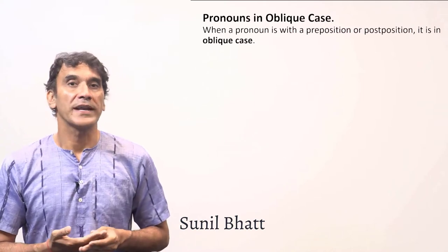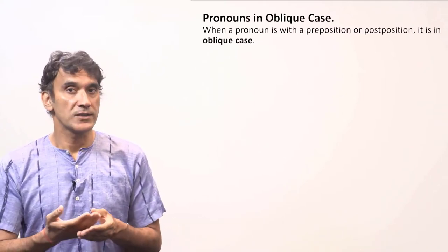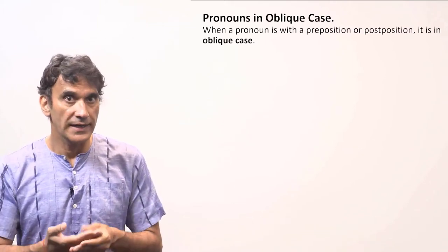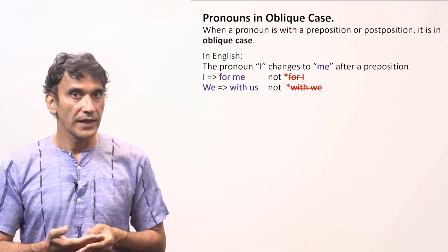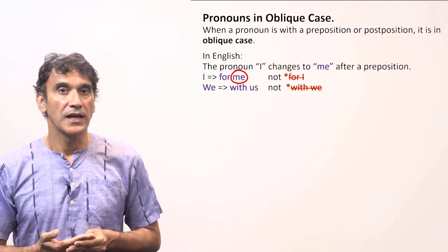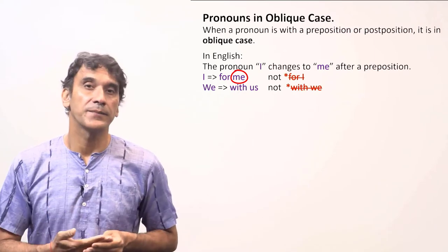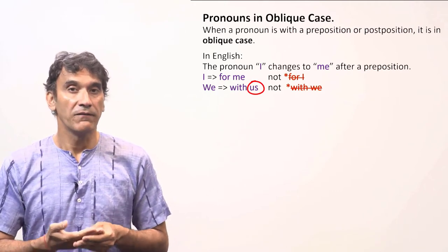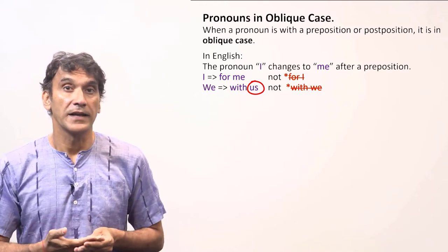The next grammar point is pronouns in oblique case. In previous grammar points we learned what the oblique case is — when a pronoun is with a postposition it is in oblique case. Let's take a few examples in English: the pronoun 'I' changes to 'me' with prepositions. The pronoun 'we' becomes 'us' in oblique case — it's 'with us', never 'with we'.